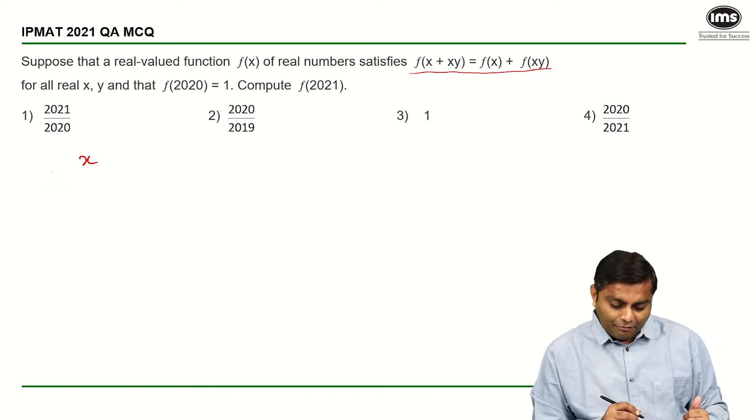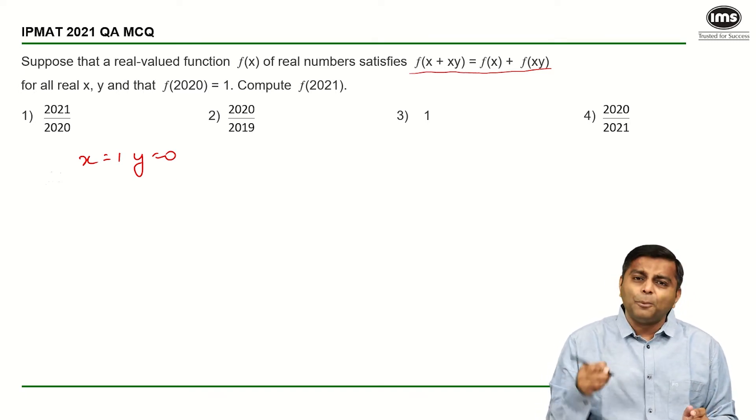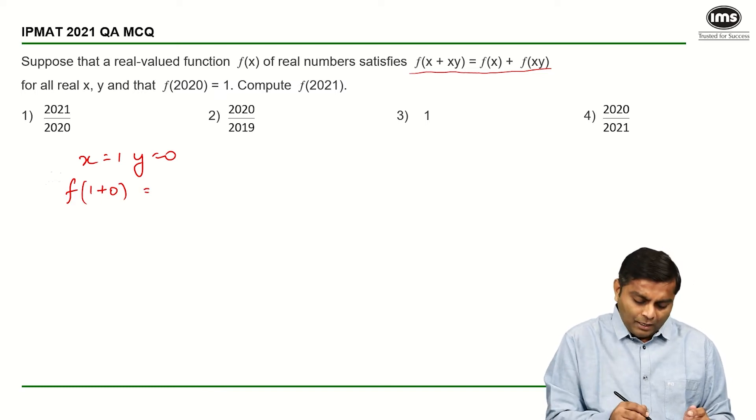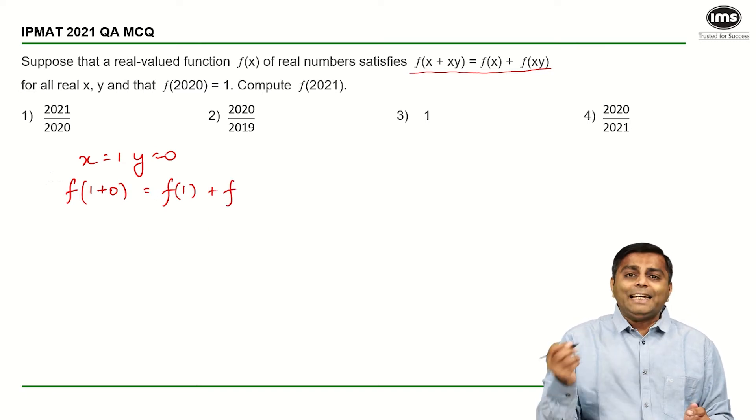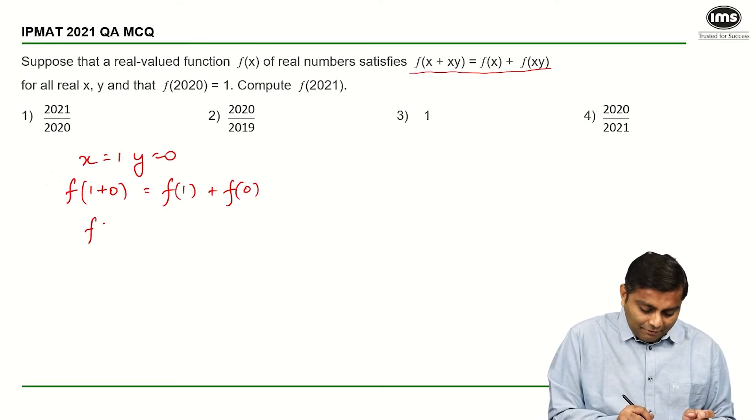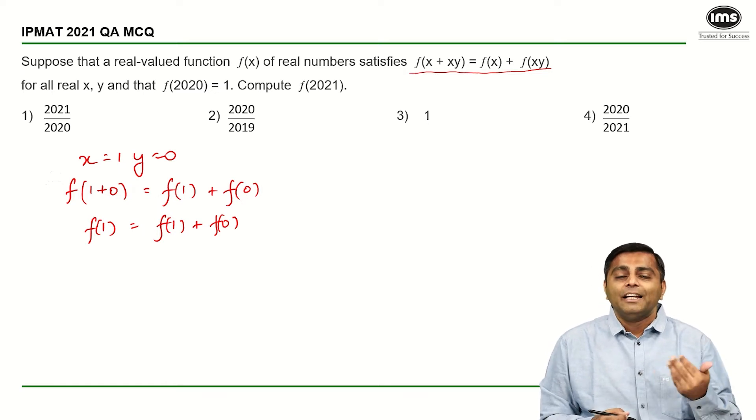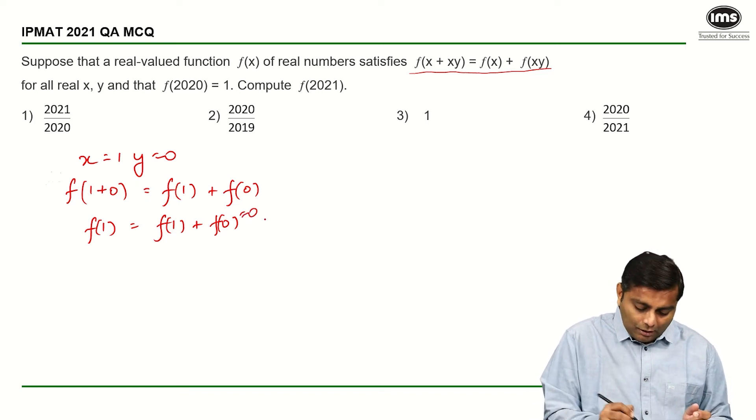Let us say I want to find out f(1). I can find out by putting x = 1, y = 0. If I put x as 1 and y = 0, I find f(1+1·0), so f(1+0) which is f(1) = f(1) + f(1·0) = f(1) + f(0). On the left hand side, we have f(1) = f(1) + f(0). The only possible value for f(0) has to be 0, only then this equality will be true. So f(0) = 0, we figured out. Some progress at least.